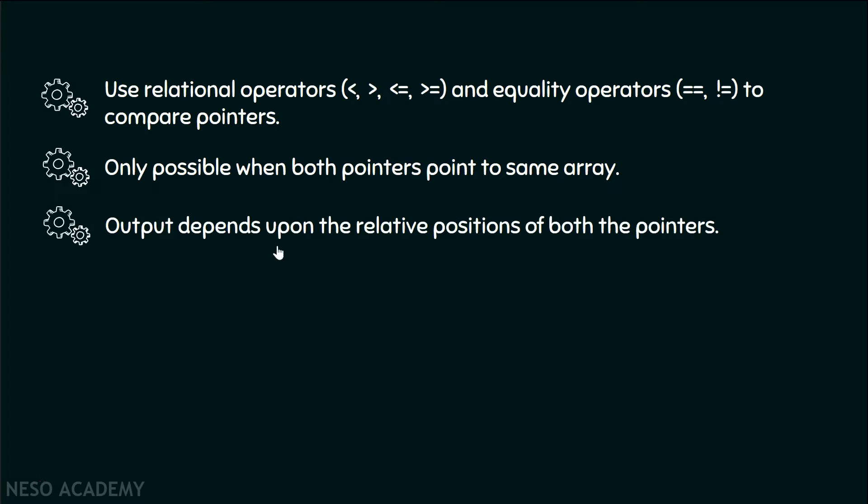The output depends upon the relative positions of both the pointers. It is very important that the output always depends upon the positions of both the pointers. Now, let's see one example.